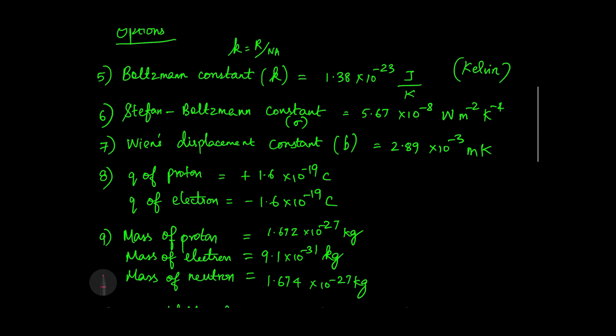Next, Boltzmann constant: value K is equal to 1.38 × 10 power minus 23 joule per kelvin. An important relation is K equals R divided by Nₐ, where K is the Boltzmann constant and R is the universal gas constant.